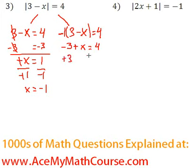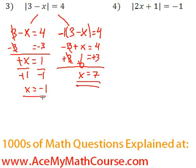Okay, then we just add 3 to both sides of the equation. So these guys cancel out. Bring down the x. 4 plus 3 is 7. So x is 7, or x is negative 1.